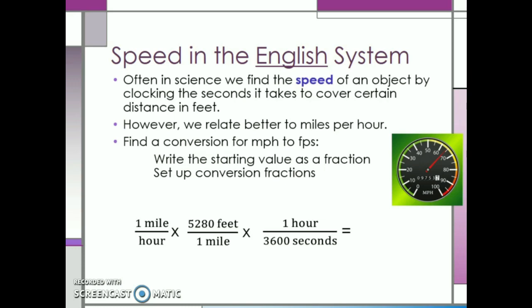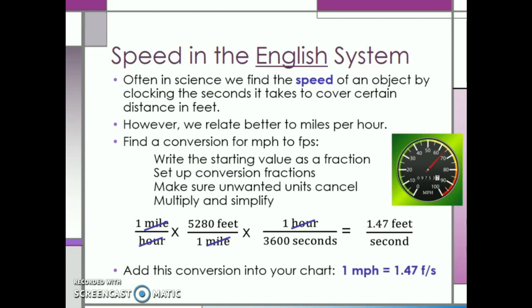Now we can cancel our unwanted units. Miles over miles cancel each other out, and hours over hours cancel each other. We are left with units of feet per second, which is exactly what we want. Our last step is to multiply everything across in the numerator, everything across in the denominator, and divide. This gives us a final answer of 1.47 feet per second. So one mile per hour is equal to approximately 1.47 feet per second.